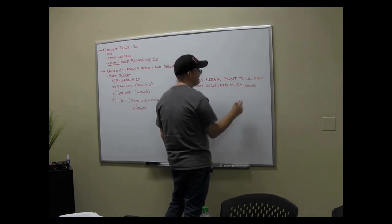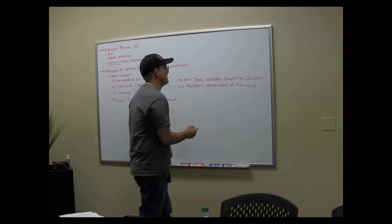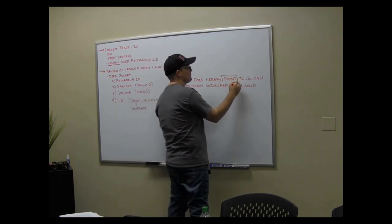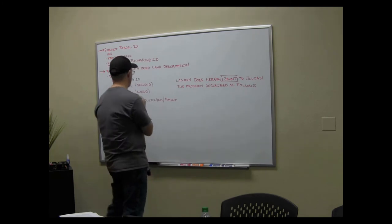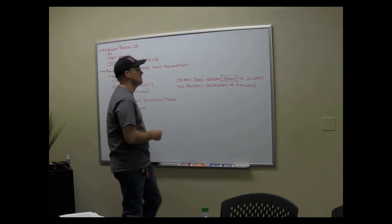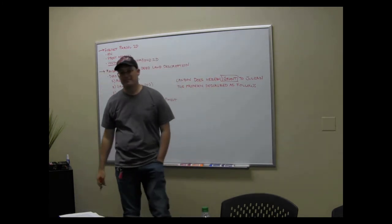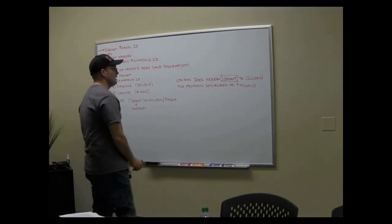Other times you have to look at the clause, so the clause will say Landon does hereby grant to Julian the property described as follows. This is called the granting clause. So if it doesn't tell you at the top of the deed, the newer deeds will tell you, but if it doesn't tell you at the top of the deed, you've got to look for this word right here.